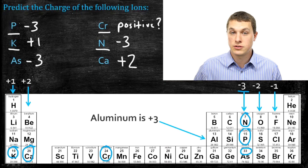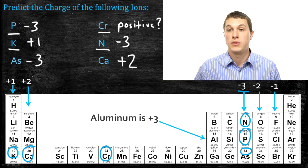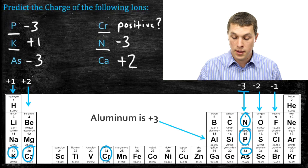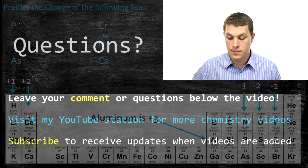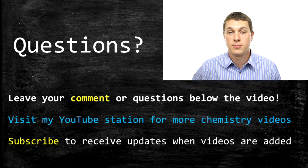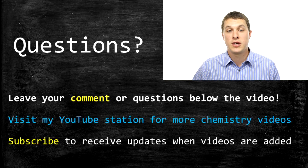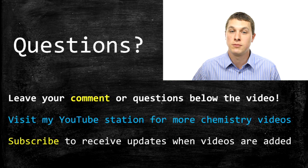Neutral atoms just have the same number of electrons and protons. But if any of these elements become an ion — that is, they give up or gain electrons — we can now predict how many electrons they would give up or gain. That does it for this episode of Real Chemistry. Thanks for watching. Please check out my videos on my channel, subscribe to get updates about new videos, and if you have any questions or comments, please leave them below.